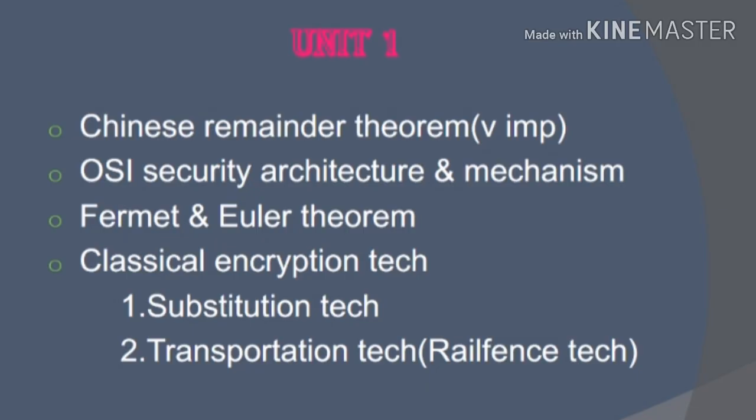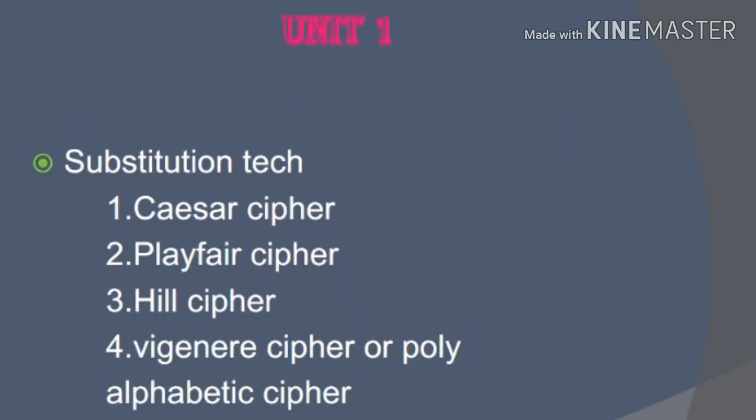You will learn some more. The first topic is OSI Security Architecture and its mechanisms. For Classical Encryption Techniques, there are two types: the first one is Substitution Technique and the second one is Transposition Technique. Under Substitution Technique, there are four types: Caesar Cipher, Playfair Cipher, Hill Cipher, and Vigenere Cipher, also known as Poly Alphabet Cipher. The most important are Caesar Cipher and Playfair Cipher.